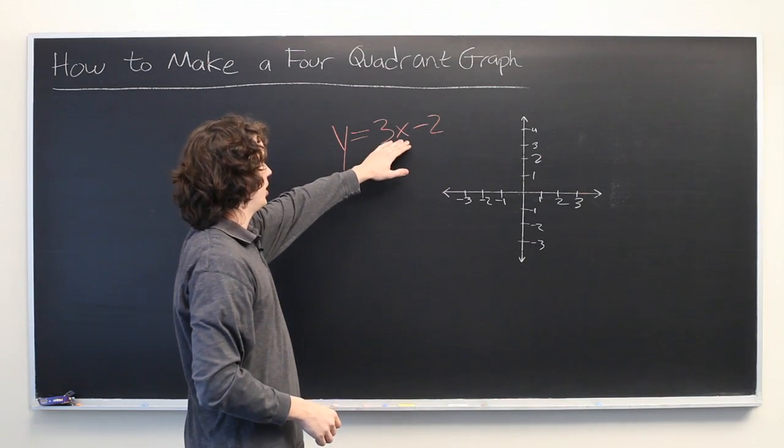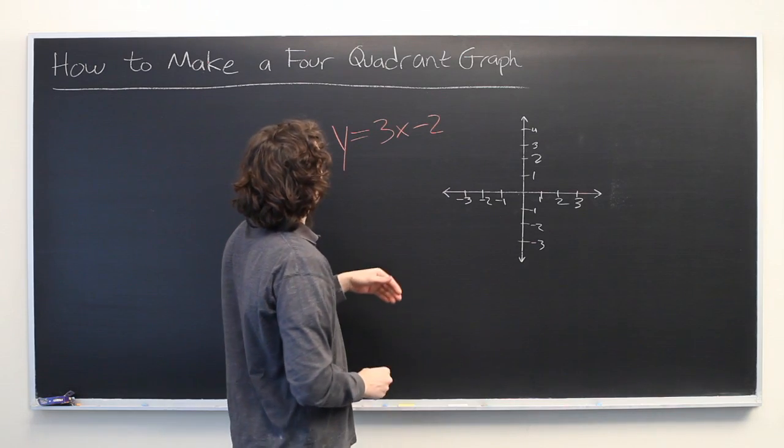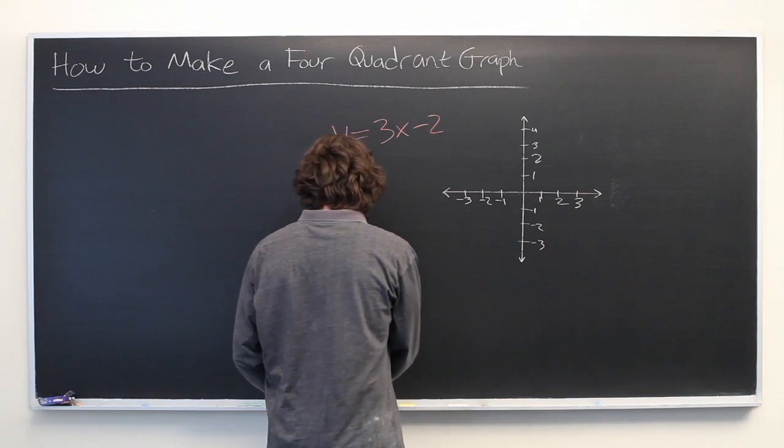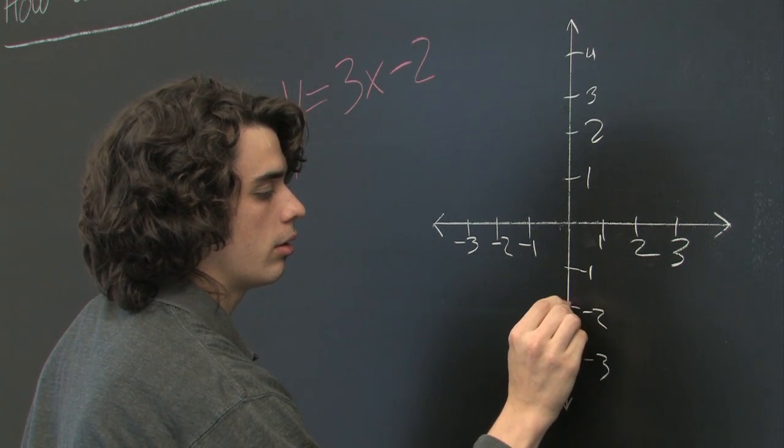All right, so just start plugging in some input values for x and seeing what you get for y. So here, if x is zero, three times zero is zero, we get negative two. So I'll mark that down, negative two.